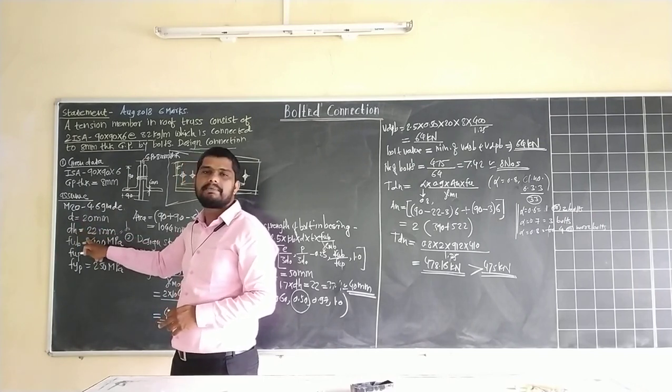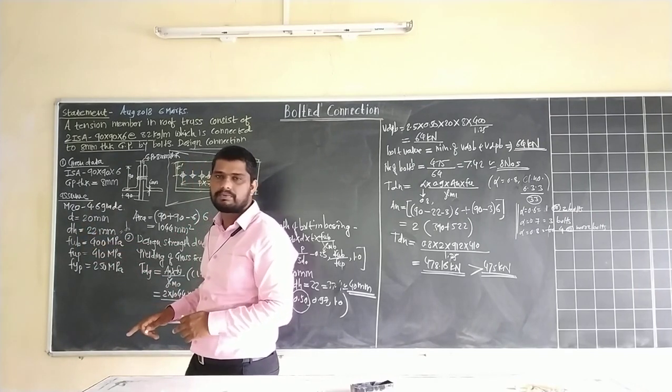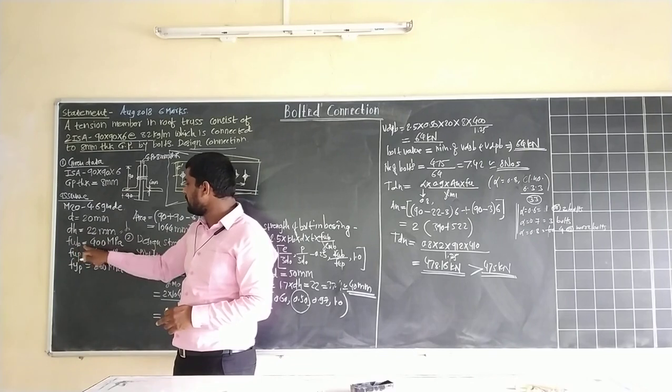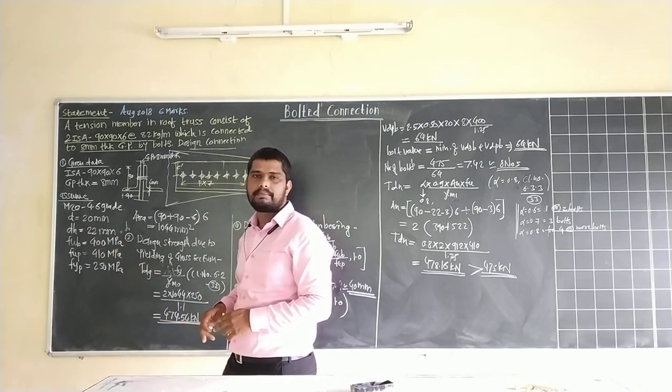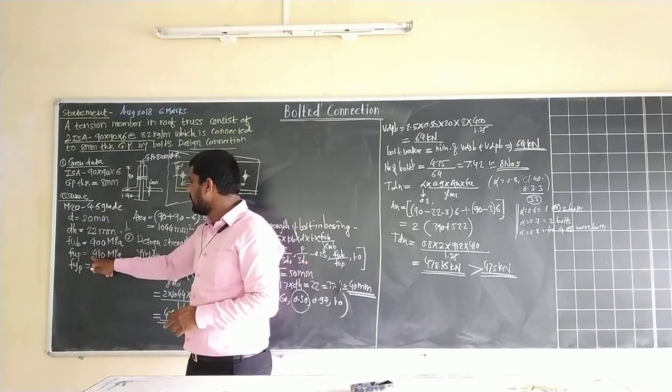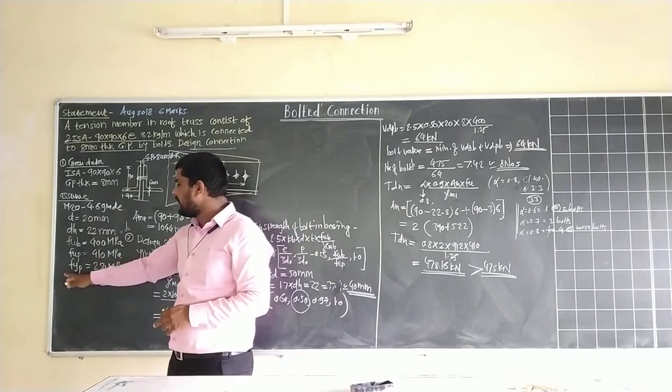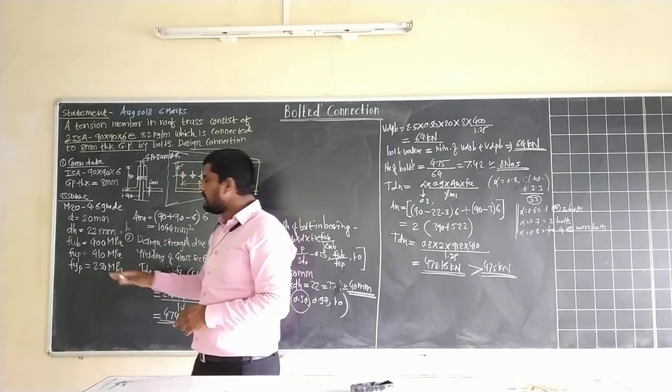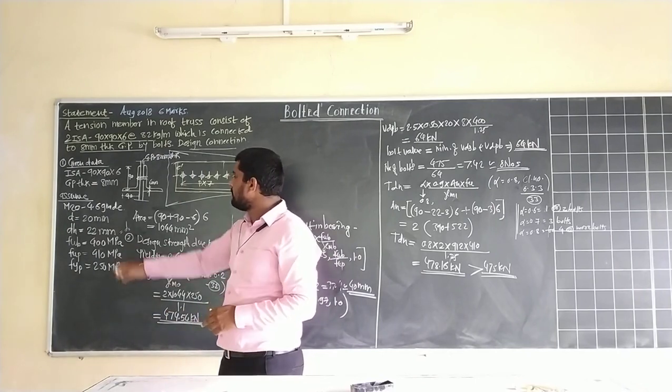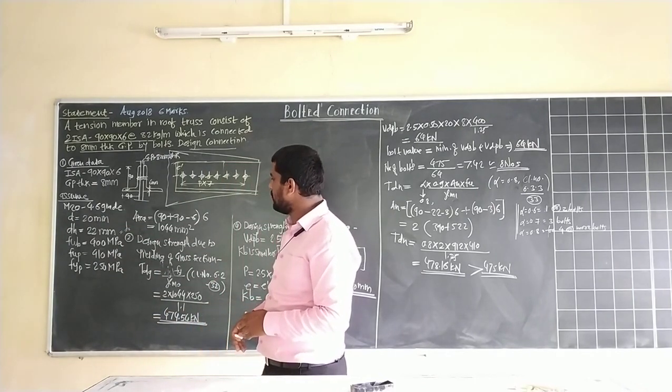20 plus 2 mm gives 22 mm. Then F_UB is 400 N per mm square or 410 MPa. F_YB is 250 MPa as per M20 grade 4.6 bolt.